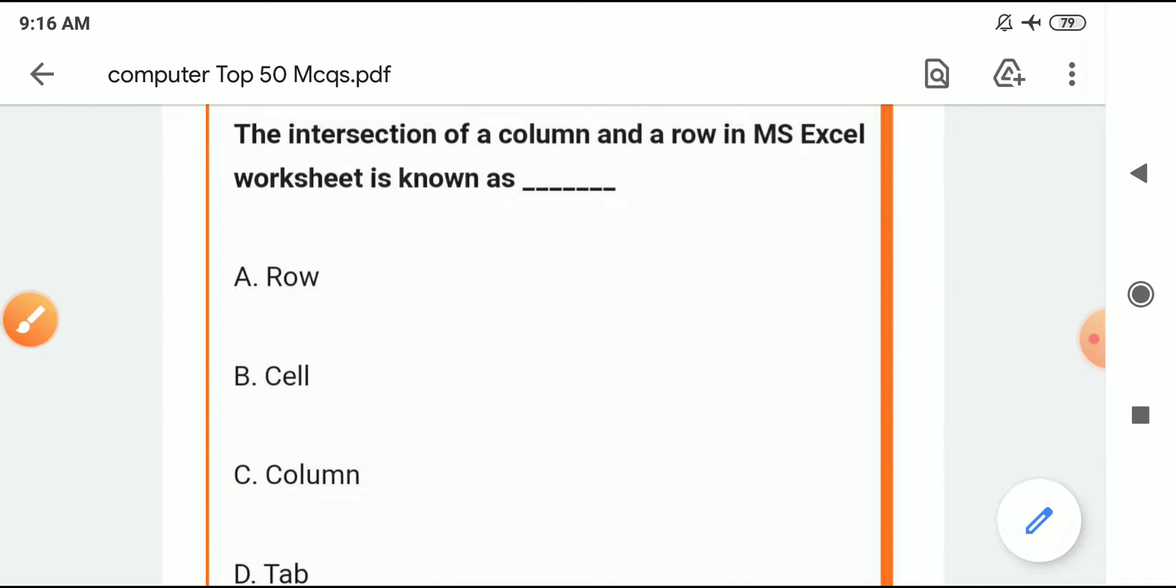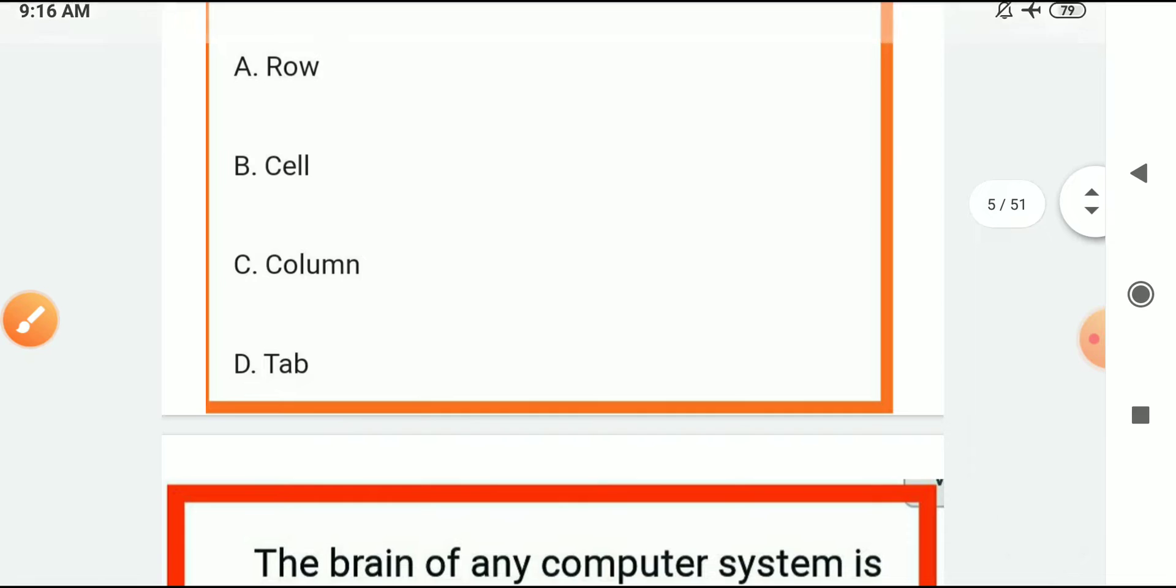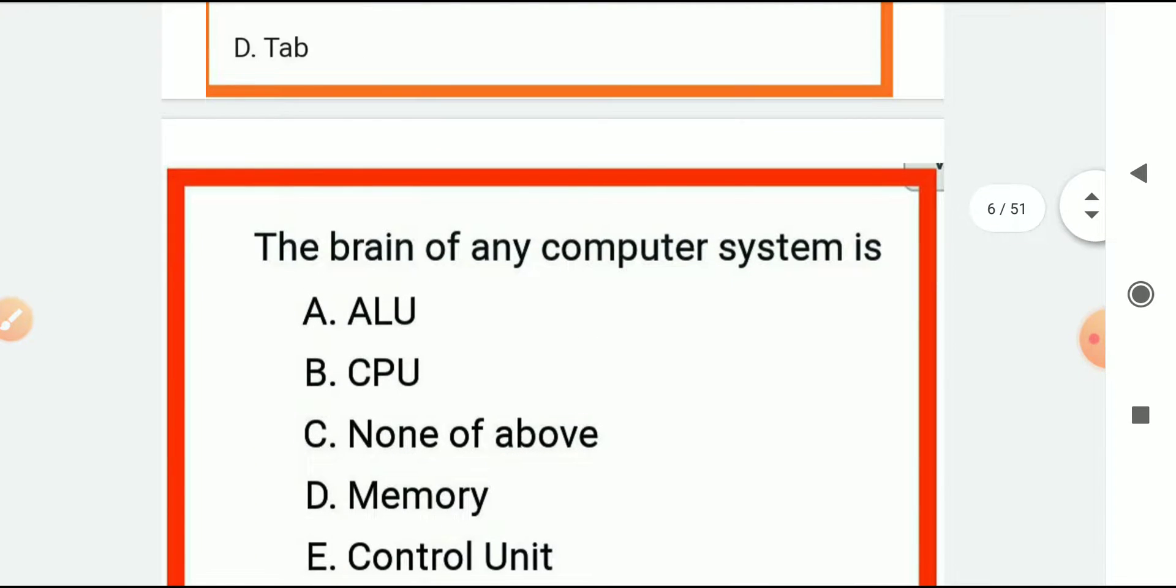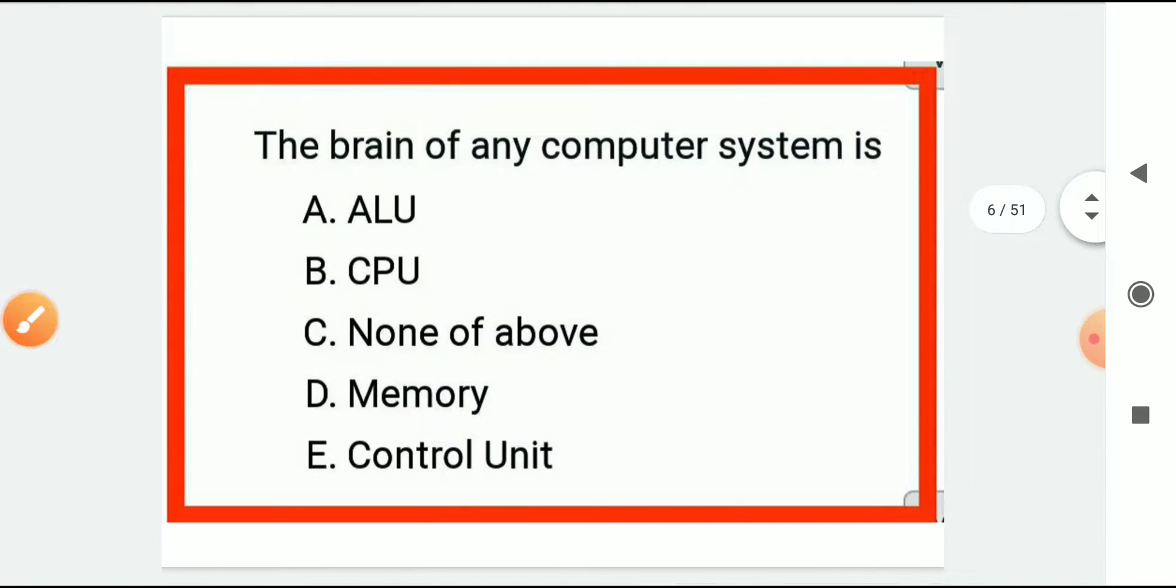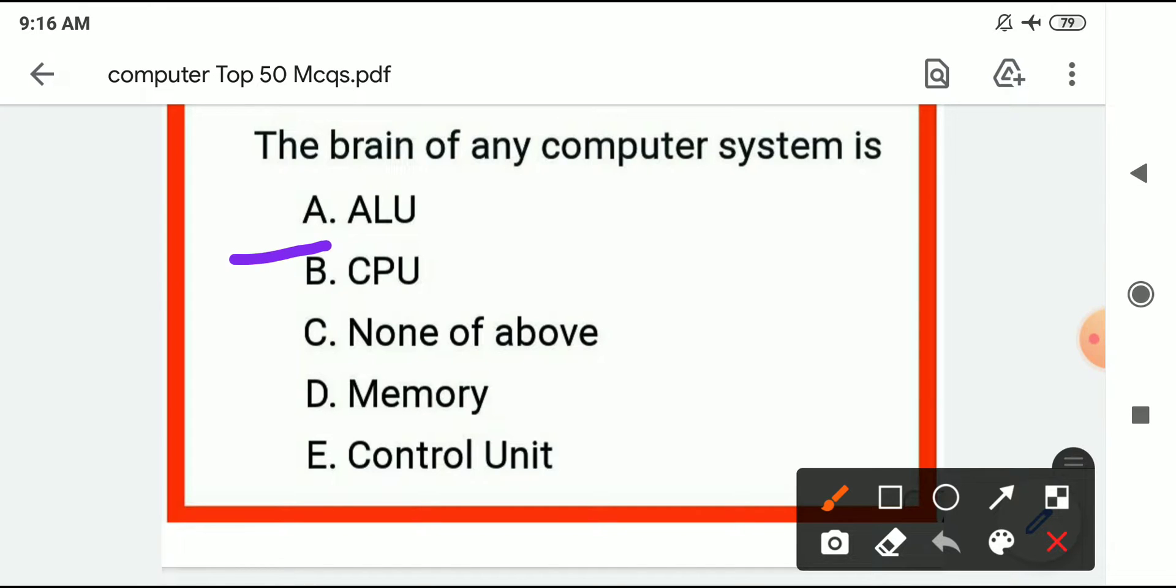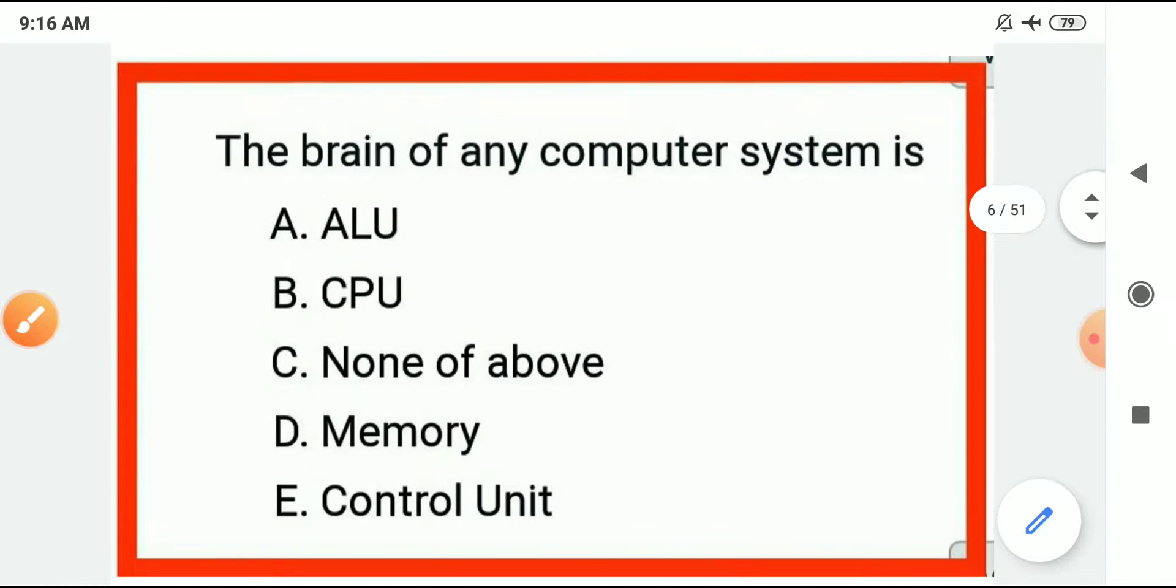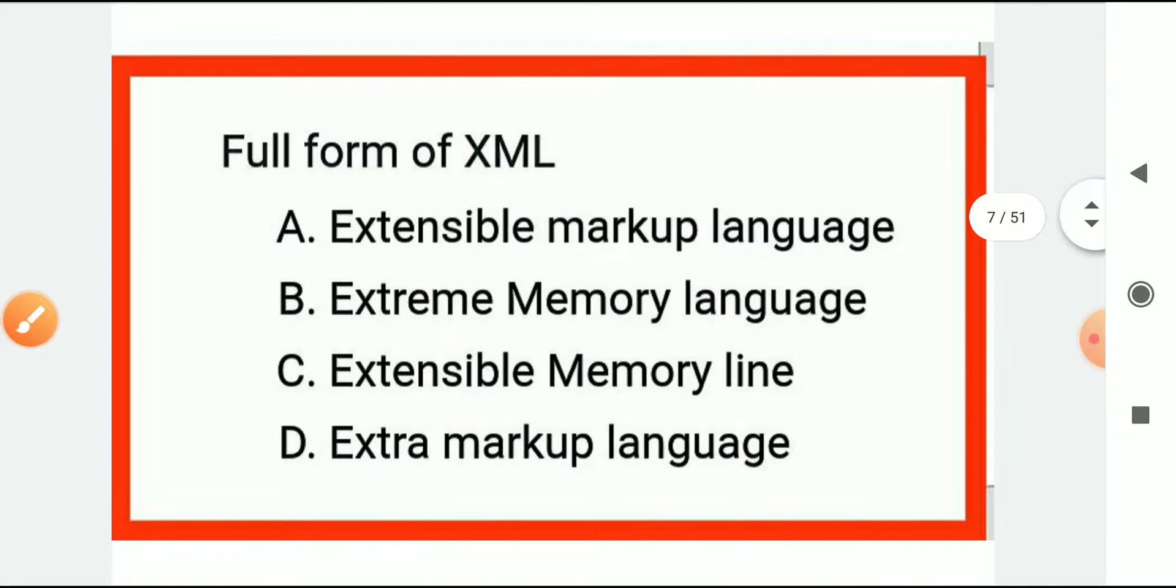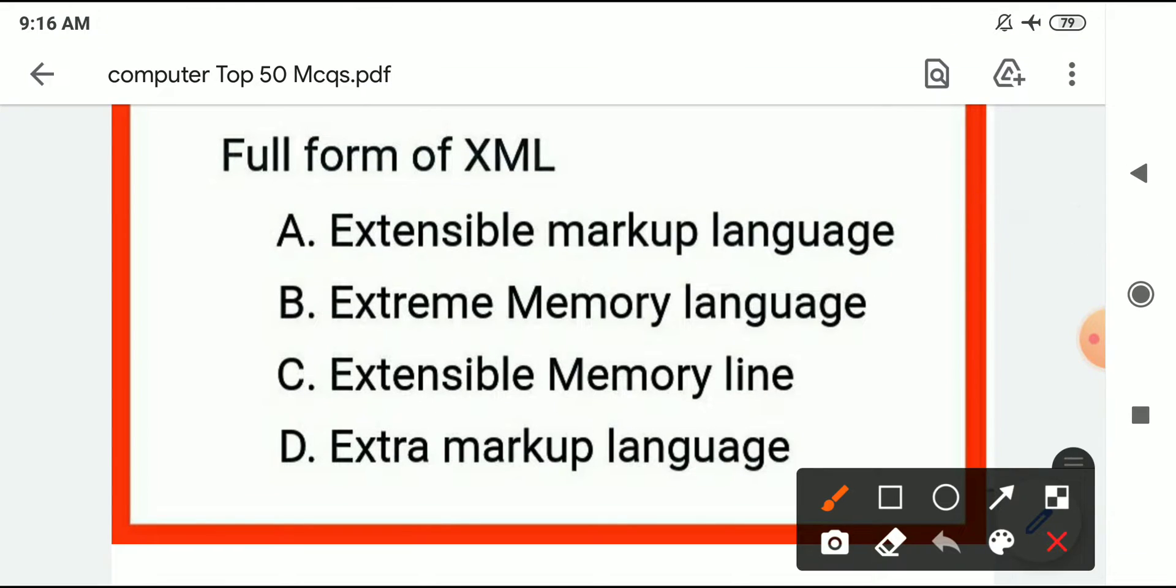The intersection of rows and column in MS Excel. The brain of any computer system - the brain of the computer is CPU, central processing unit.